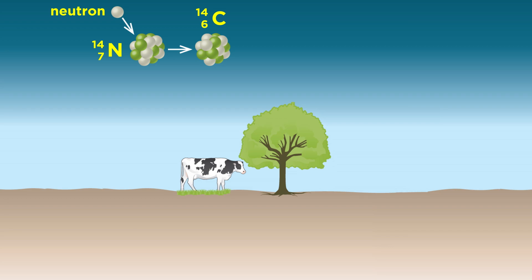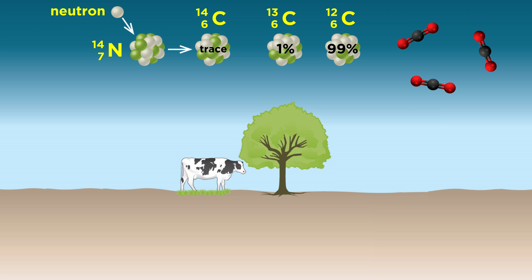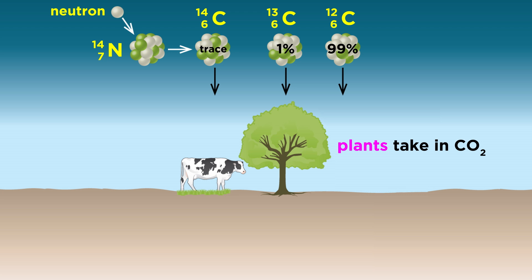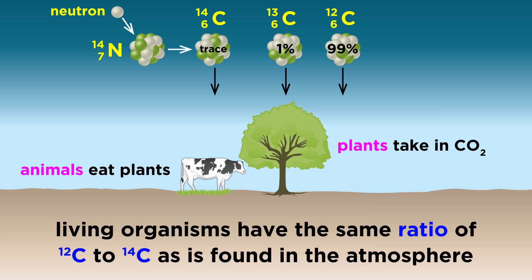Carbon-14 forms in the upper atmosphere when nitrogen-14 collides with neutrons from cosmic rays in space. Although the vast majority of carbon is carbon-12, and most of the rest is carbon-13, there is a trace amount of carbon-14 anywhere there is carbon on earth, including the carbon dioxide in the atmosphere. Carbon dioxide is absorbed by plants, and plants are eaten by animals, so living organisms, which are constantly bringing in material and expelling waste, will display the same ratio of carbon-12 to carbon-14 as is found in the atmosphere.